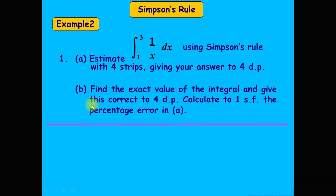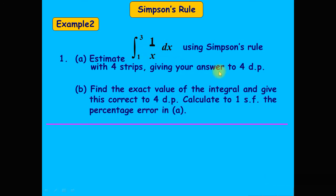Another example: estimate the integral from 1 to 3 of 1/x with respect to x using Simpson's rule with four steps. Give your answer to four decimal places, find the exact value of the integral correct to four decimal places, and calculate to one significant figure the percentage error in part a.